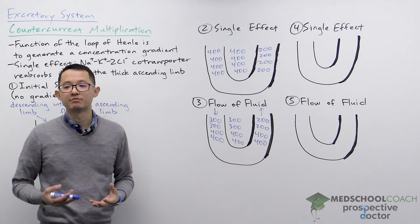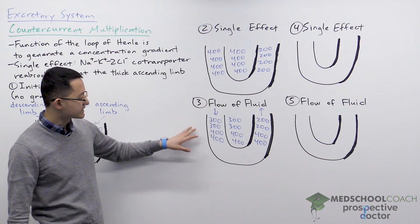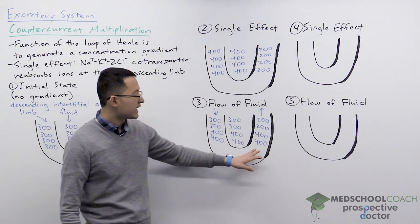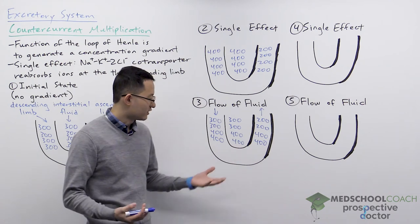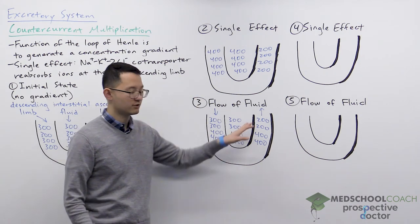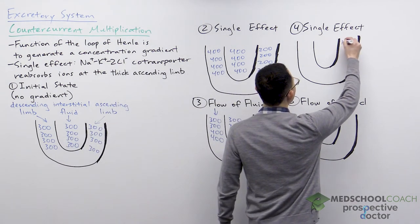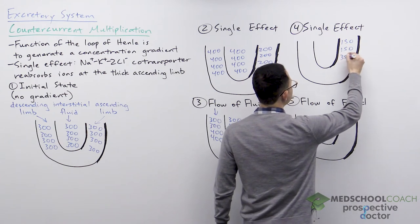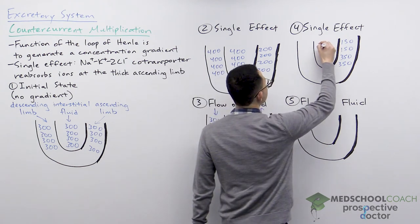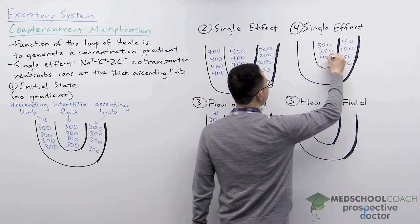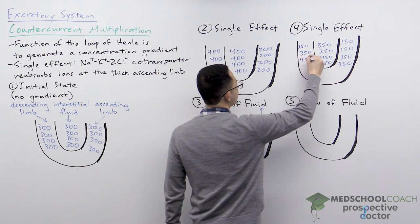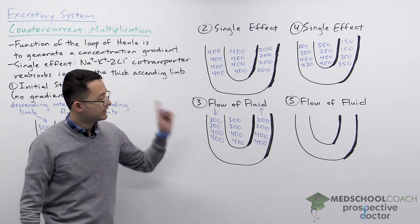All that happens is this process repeats itself over and over again. The single effect occurs again, removing solutes from the ascending limb. Because a concentration difference already exists, perhaps less solute is removed this time — say 50 instead of 100 — giving concentrations of 150 and 350 in the ascending limb. The interstitial fluid then becomes more concentrated at 350 and 450, and the descending limb equilibrates to match: 350 and 450. This is then followed by the flow of fluid again.